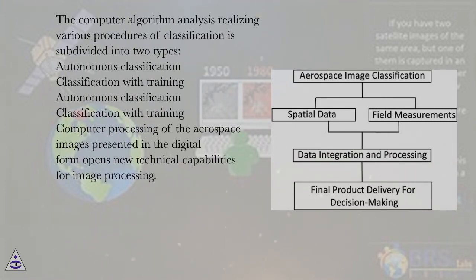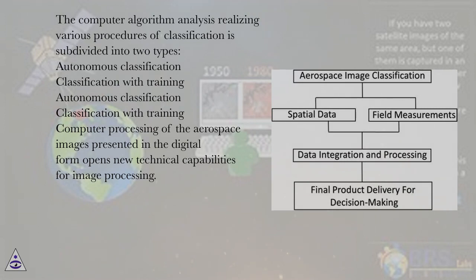The computer algorithm analysis, realizing various procedures of classification, is subdivided into two types: autonomous classification and classification with training.